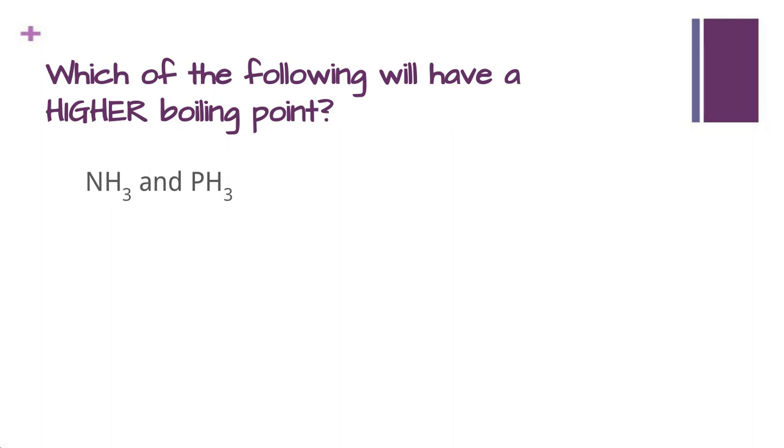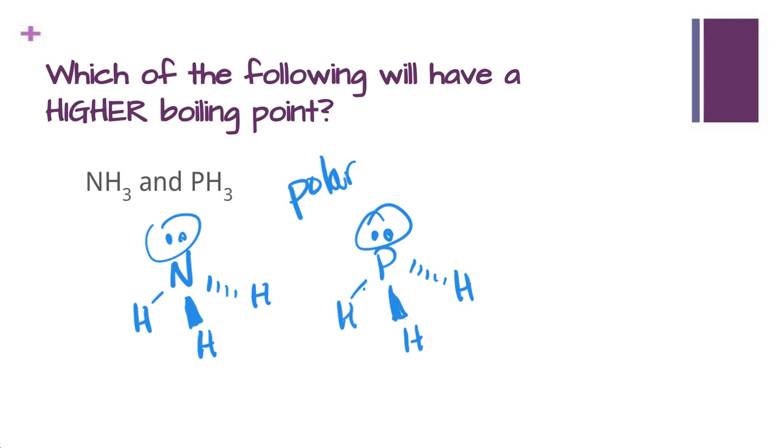One more example, NH3 and PH3. These are actually favorite molecules that you will often see in IB exams. And NH3 and PH3 both have the same structure. They are both trigonal pyramidal, with a lone pair of electrons on the nitrogen and the phosphorus. They're both overall polar because of this lone pair of electrons, we do have a negative and a positive end on these molecules. Now NH3 also has hydrogen bonding because of the lone pair of electrons and the hydrogen bonded to the nitrogen, it can form hydrogen bonds, whereas PH3 does not. So in this case, NH3 has a higher boiling point than PH3.